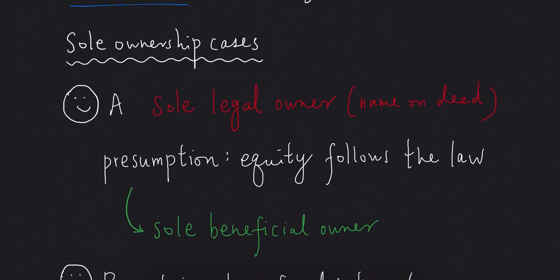Let's say we have A, who is the sole legal owner of the property. For the position in equity, the presumption of equity follows the law applies. So A is also the sole beneficial owner of the property.